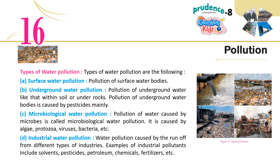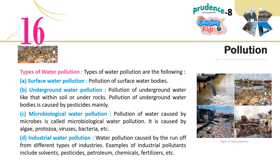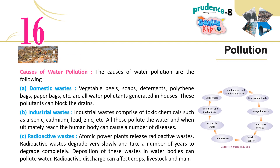D. Industrial water pollution — caused by runoff from different types of industries. Examples of industrial pollutants include solvents, pesticides, petroleum, chemicals, fertilizers, etc. Causes of water pollution: A. Domestic wastes — vegetable peels, soaps, detergents, polythene bags, paper bags, etc. are all water pollutants generated in houses. These pollutants can block the drains.